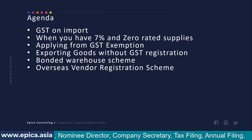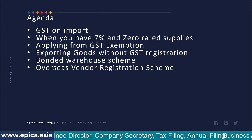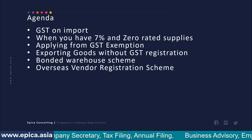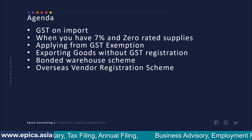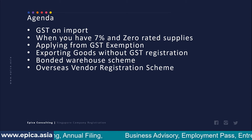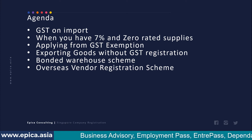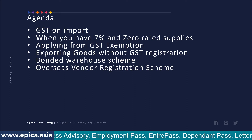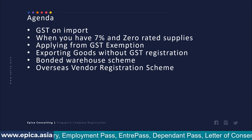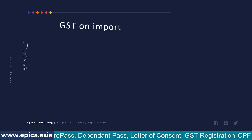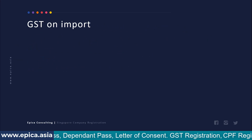The topics we are going to cover in this presentation are: GST on import, what happens when you have seven percent and zero rated supplies, applying for GST exemption, exporting goods without GST registration, bonded warehouse scheme, and overseas vendor registration scheme. Let's start with the first point: GST on import.